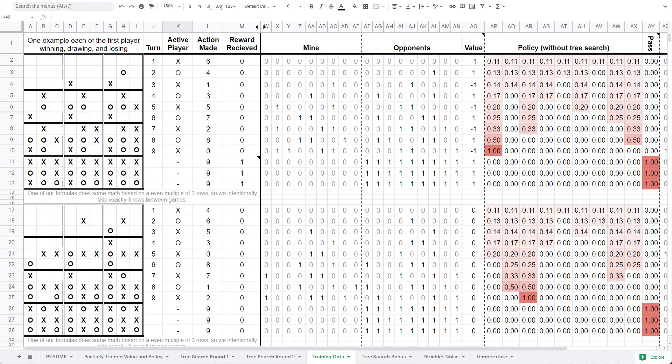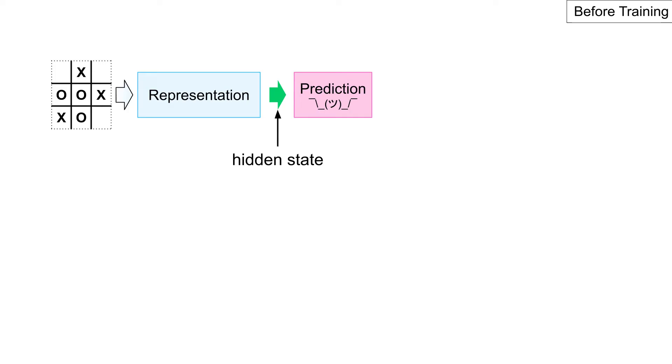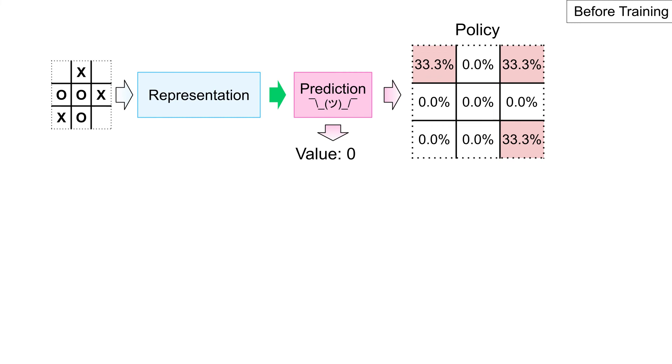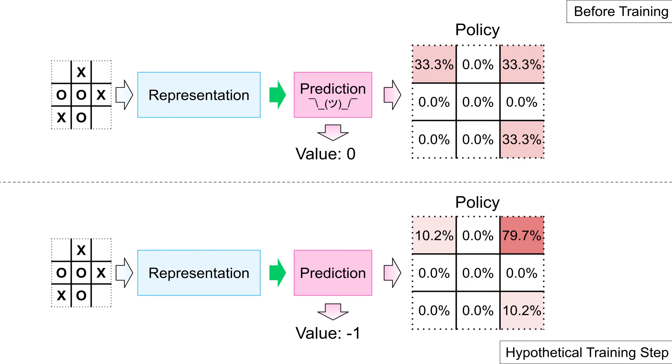Recall that the prediction network has an input which is the hidden state from the representation network. The prediction network outputs both a value and a policy. One possible way to train these two networks to work together is to sample the collected gameplay data and say, hey networks, when the representation network sees this state belonging to the O player, the prediction network should predict a value of negative 1 because the O player lost. Also, here is the policy of promising follow-up actions. Then the next training step might randomly select this state and say, predict a value of 1 because the X player went on to win from here, and these were the promising actions. While this approach would work to train these two networks, we need to include the dynamics network as well.